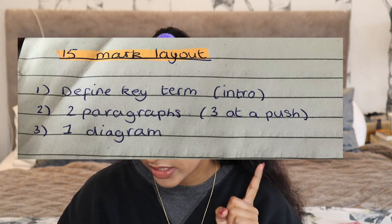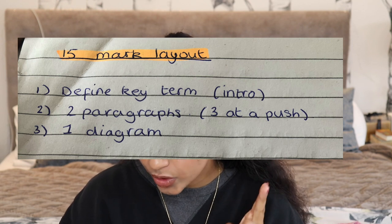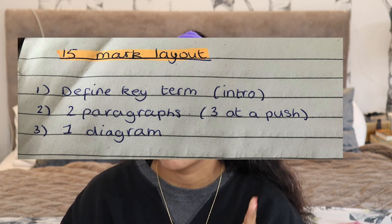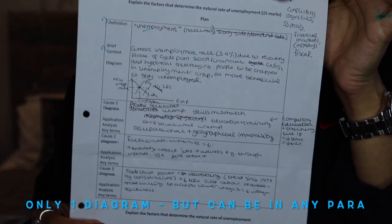This is essentially the criteria to reach the Level 3 band, which is 11 to 15 marks — the top band. You need to hit all of these points. The way my teacher told us to lay out 15 markers is: firstly define the key term in the introduction, then have two paragraphs or three at a push, and one diagram. I'm going to show you my teacher's structure on screen so feel free to screenshot it.